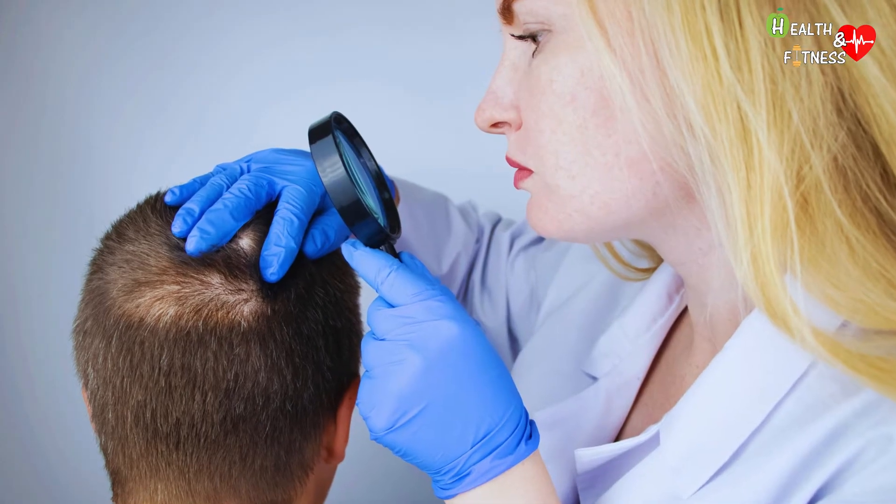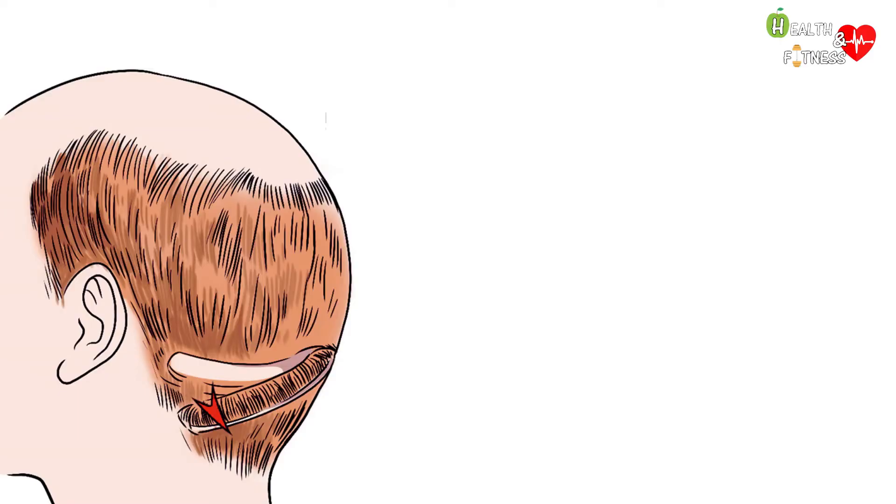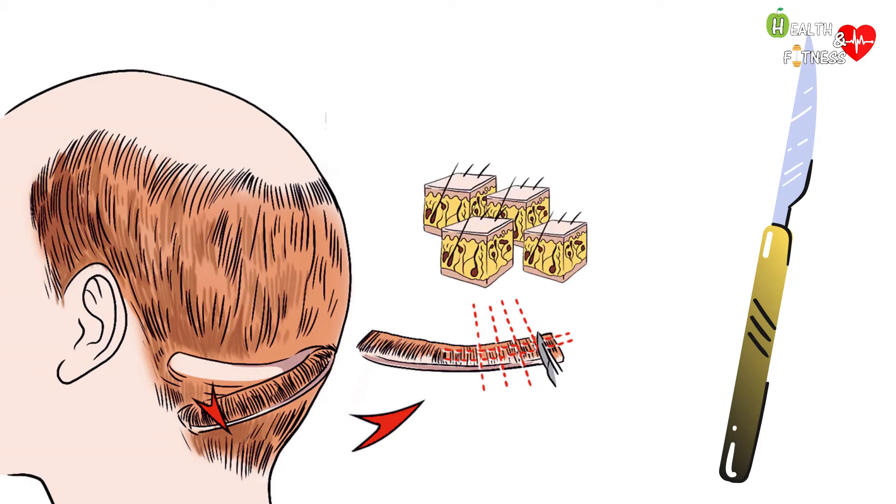FUT technique, Follicular Unit Transplantation or strip, consists of taking an entire strip of the scalp from the nape where hair growth is regular through the use of a single, double, or triple blade scalpel. This strip just removed is then sectioned several times in order to remove the intact follicular units.